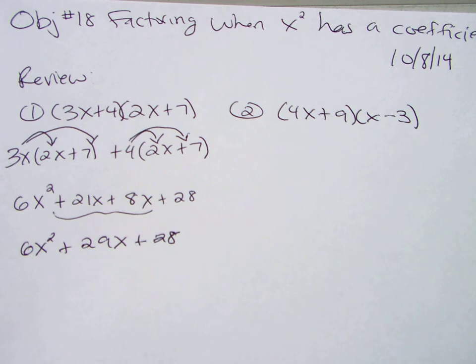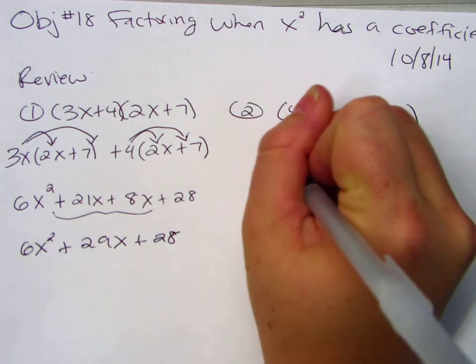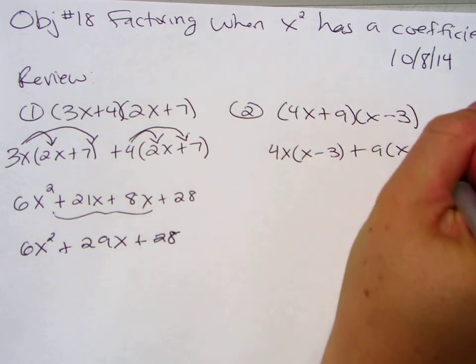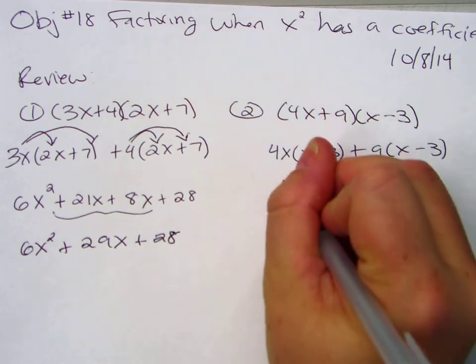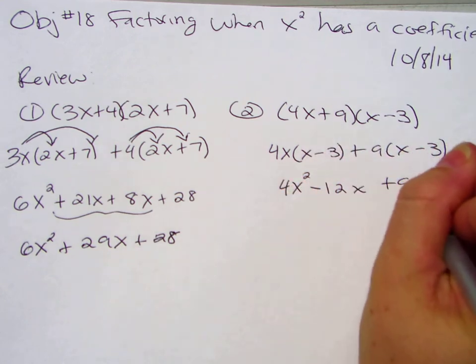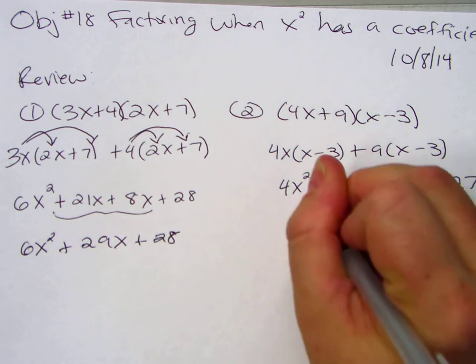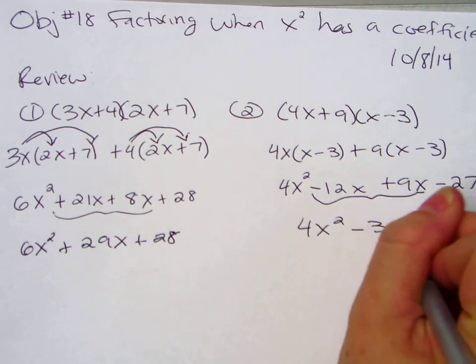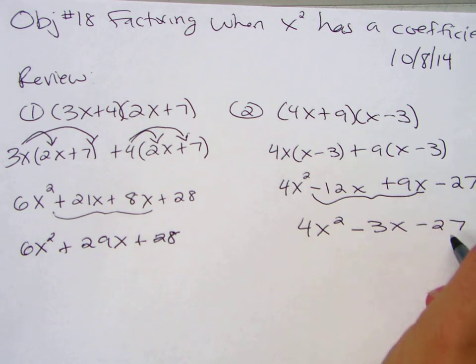And we're done. Second one, same idea, 4x times x minus 3, and then 9 times x minus 3. Distribute 4x squared minus 12x plus 9x minus 27. Put those middle two together. 4x squared minus 3x minus 27. Okay?